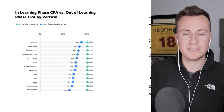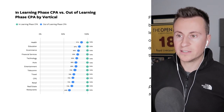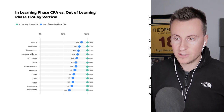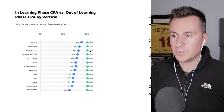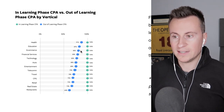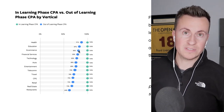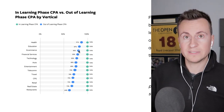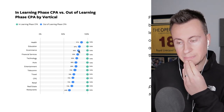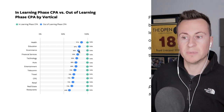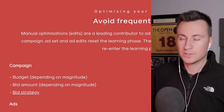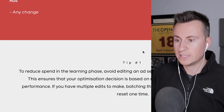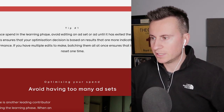Let's look at some data from Facebook on how the learning phase affects ad costs. Looking at the learning phase CPA versus out-of-learning-phase CPA, for e-commerce ads are on average 14% cheaper once you complete the learning phase. In a business model like dropshipping where margins are already tight, a 14% difference is massive.